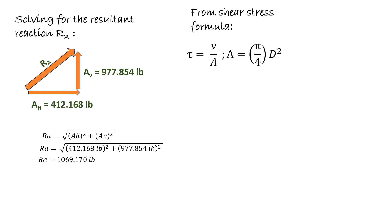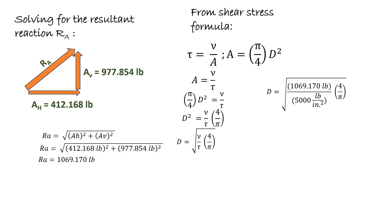We now have the value of the reaction at A. From the shear stress formula, shear stress τ = V/A, where A is the area of the circular cross-section. Solving for area: A = V/τ, then solving for diameter, we plug in RA as the shear force and τ = 5000 psi. We get a diameter of 0.52178 inches, or approximately 0.52 inches. That is the final answer for this problem.